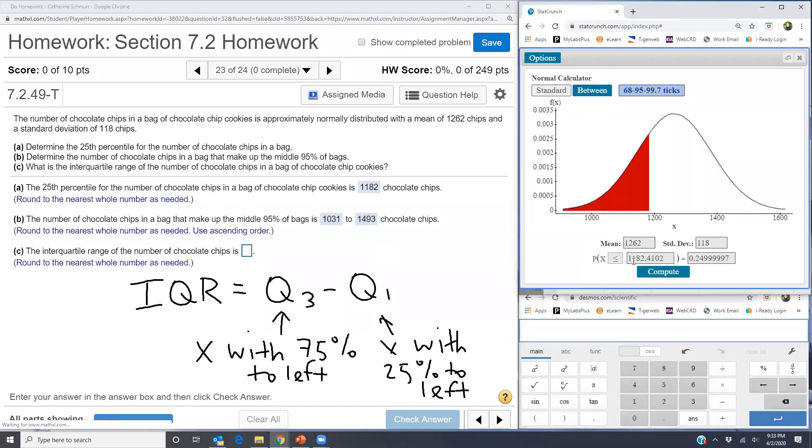So in my normal calculator, I'm going to go back to my standard normal calculator. For Q3, I'm going to put less than or equal to blank equals 0.75. So my Q3 is 1342. So what I'll do is I'll write that down. So I have 1342.